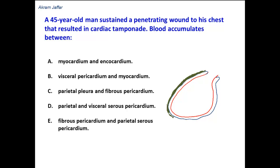The pericardial cavity is located between the parietal layer of the serous pericardium and the visceral layer of the serous pericardium. So in cardiac tamponade, where would the blood accumulate?